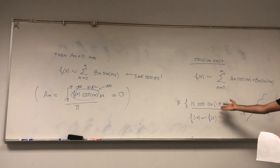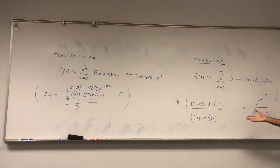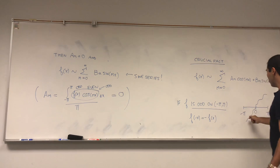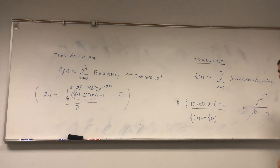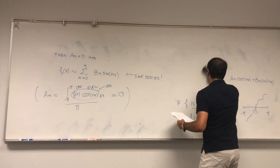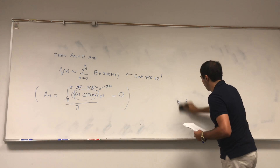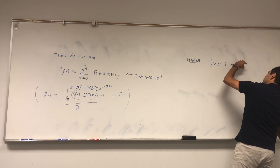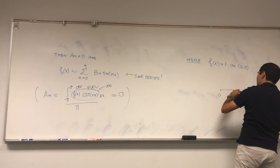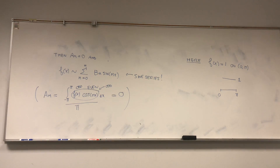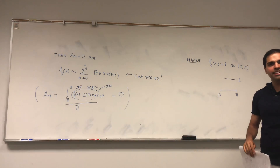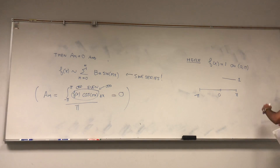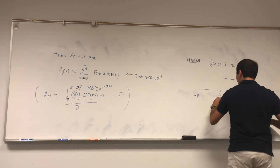However, if f is an odd function from minus pi to pi, then you get a full sine series. But there are two problems: first, our function f equals 1 is not odd; and moreover, it's not defined on the whole interval minus pi to pi — it's only defined on zero to pi. So the question is, what do we do with our function here? We want an odd function on the whole interval minus pi to pi.